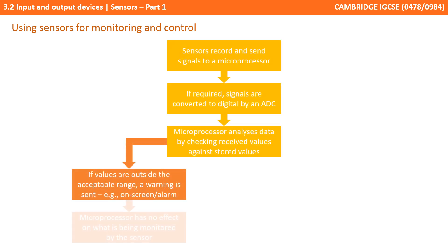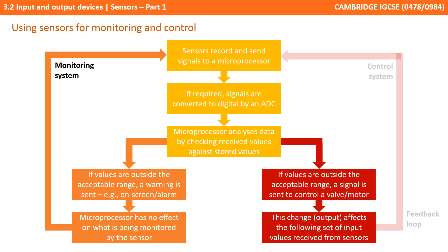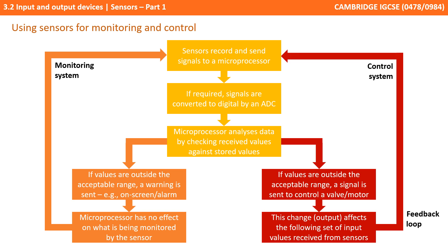Before we look at sensors in more detail, let's consider two main situations: where we're using sensors for monitoring and when we're using them for control. The process starts off the same with the yellow boxes. Sensors record and send signals to a microprocessor or computer. Those signals are converted, if necessary, by an analogue to digital converter. The microprocessor analyses the data by checking the values received against stored values. Going down the orange route, if the values are outside an acceptable range, we produce some kind of warning — sent to a screen or an audio alarm. The computer or microprocessor monitoring these values has no effect on what is being monitored; this is purely a monitoring effect only.